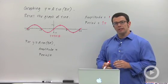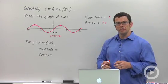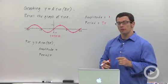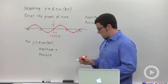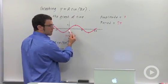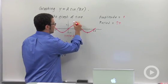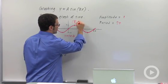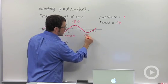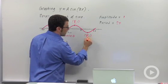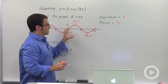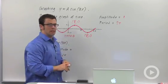When we're graphing sine and cosine functions in the future, we'll really want to know the key points of the sine graph and cosine graph. For the sine graph, the key points are: (0,0), (π/2, 1), (π, 0), (3π/2, -1), and (2π, 0). These five points are really important and we'll use them a lot when we're graphing sine and cosine functions.